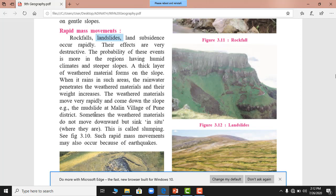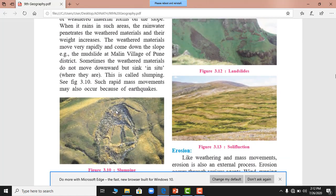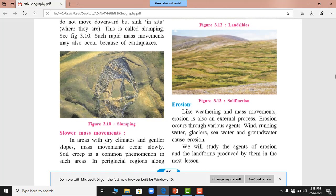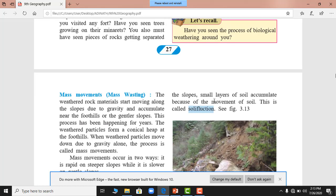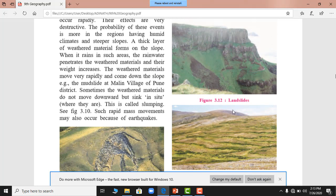For example, mudslide at the Malin village of Pune district. Sometimes at Malin village near Pune. Mudslide. Sometimes the weathered materials do not move downward but sink in situ where they are. This is called the slumping. See the look at this figure 3.10. This is slumping. The slower mass movement in a dry climate and gentle slope mass movement occur slowly while soil creep is common phenomenon in such areas. The small layer of soil accumulate because of the movement of soil. This is called solifluction. You must see, you must know, you must keep remember that this landslide occur through the rapid movement. It is not a slow moment.